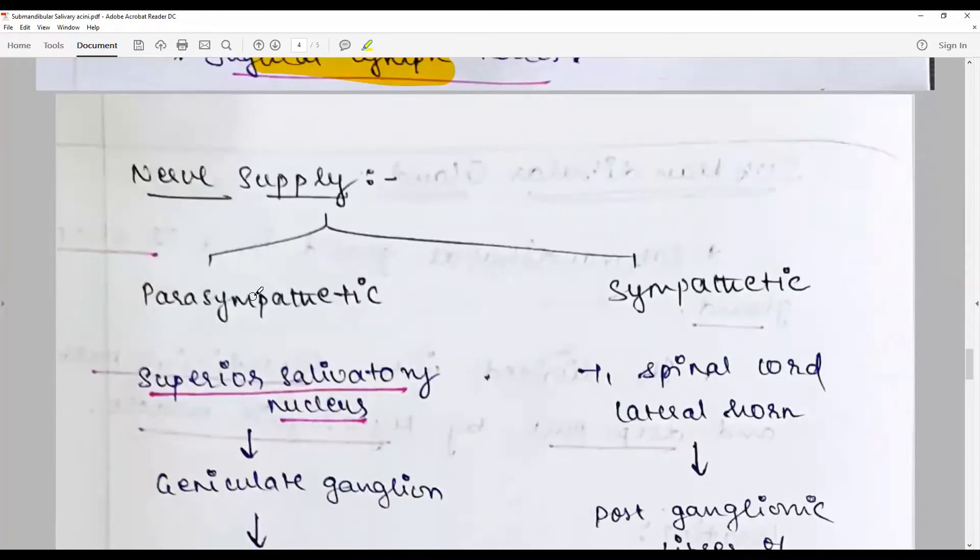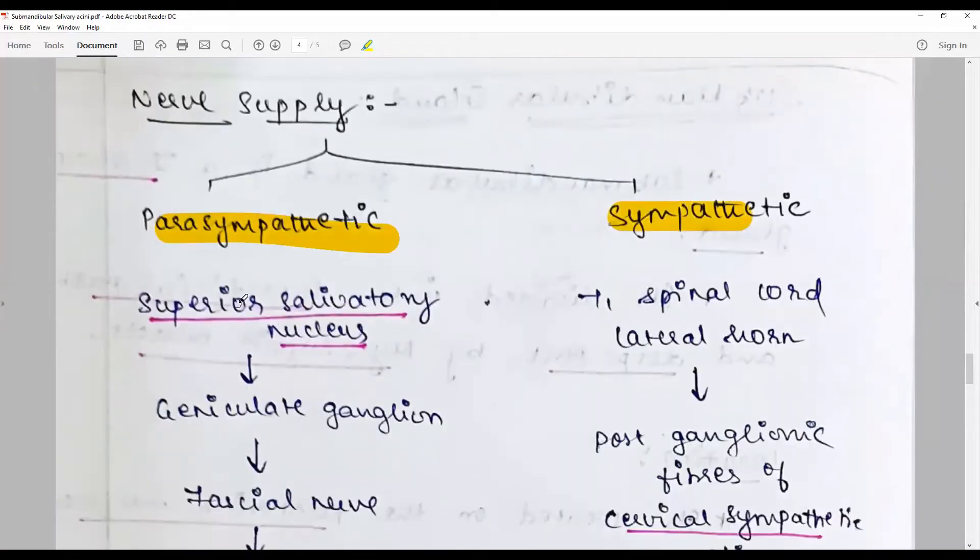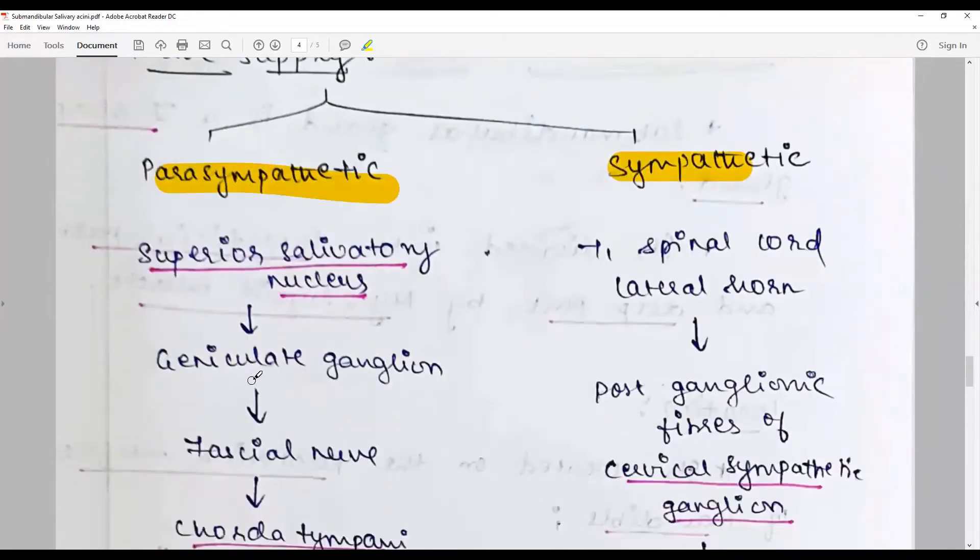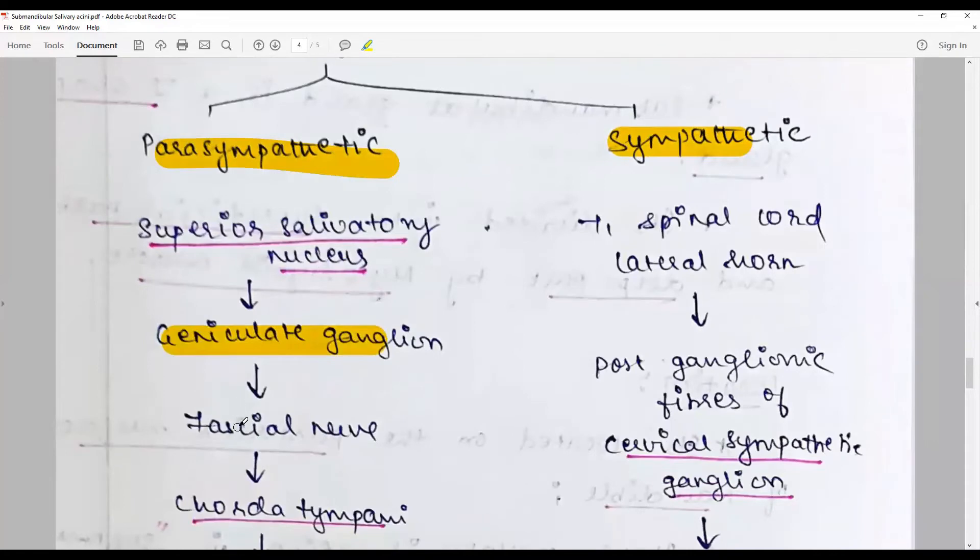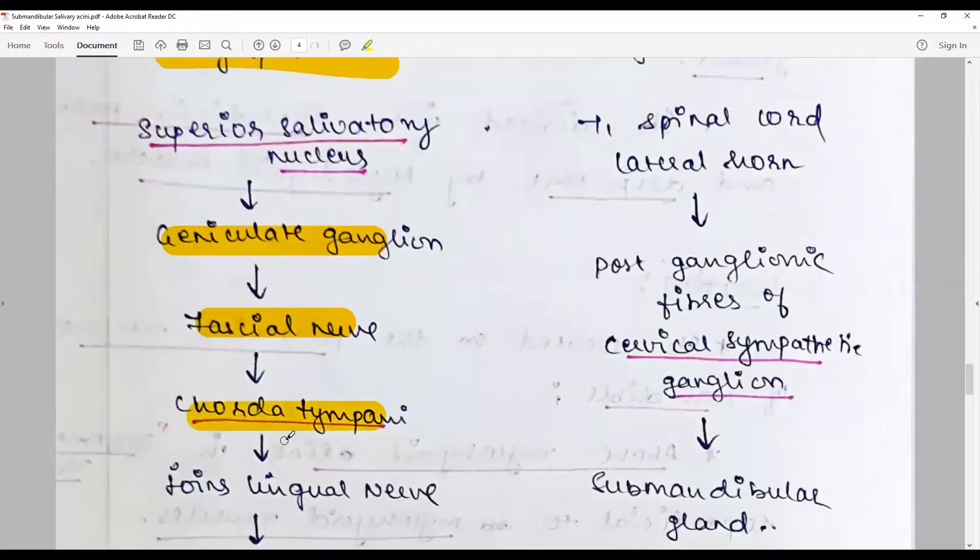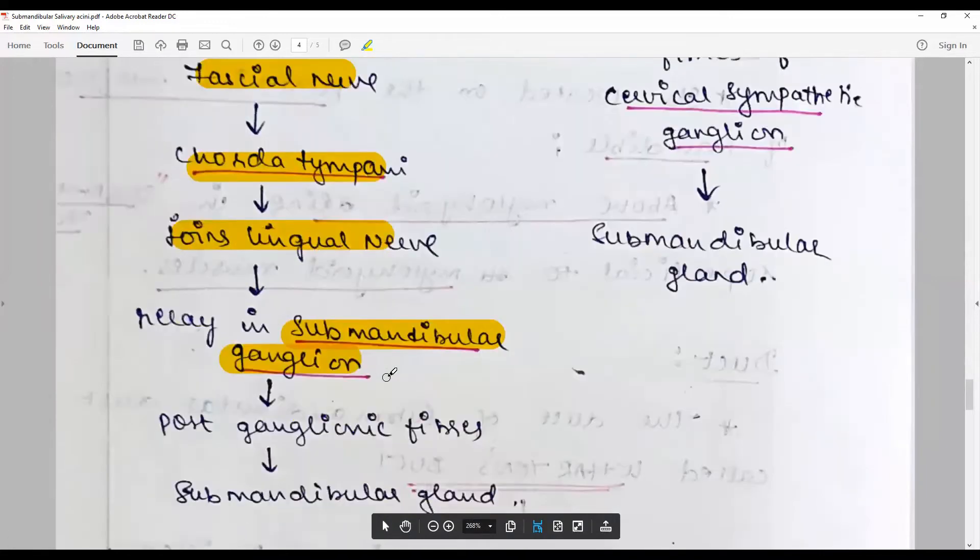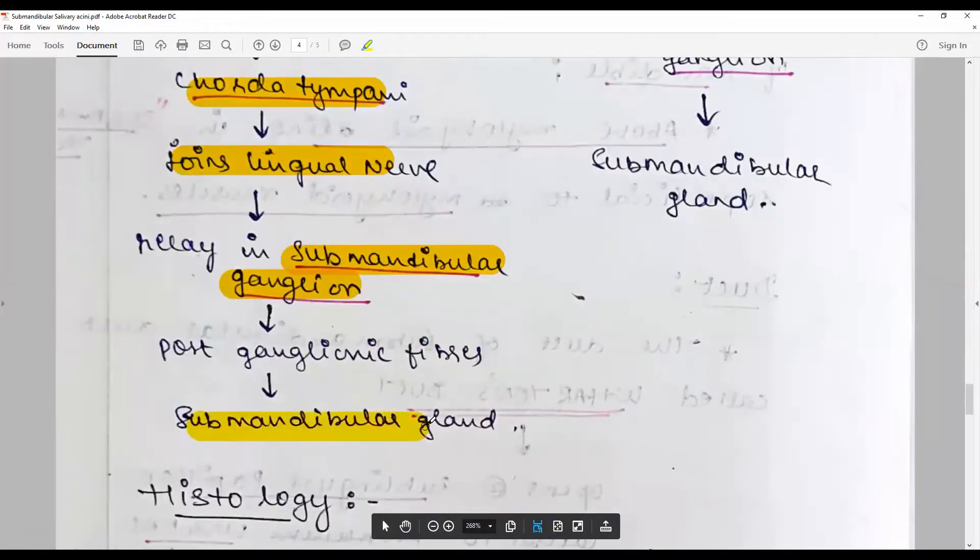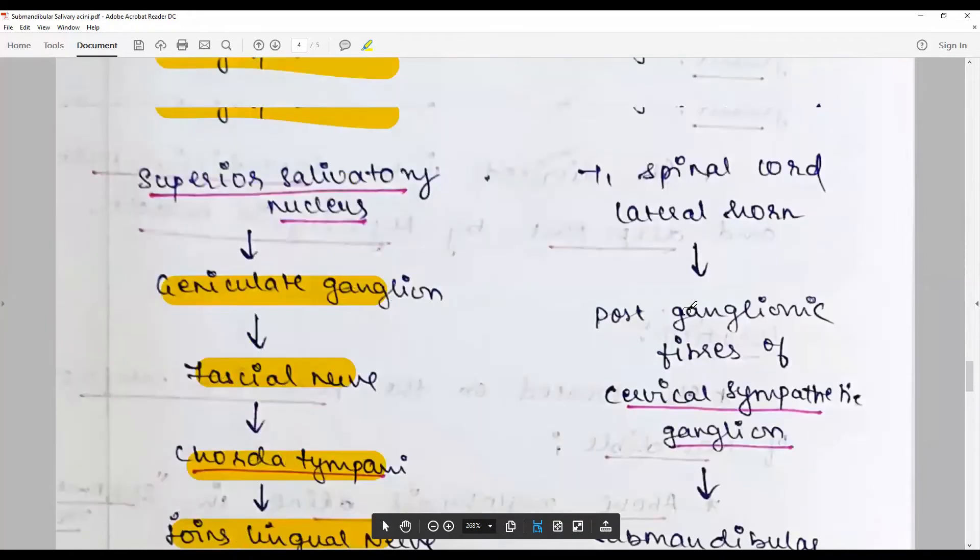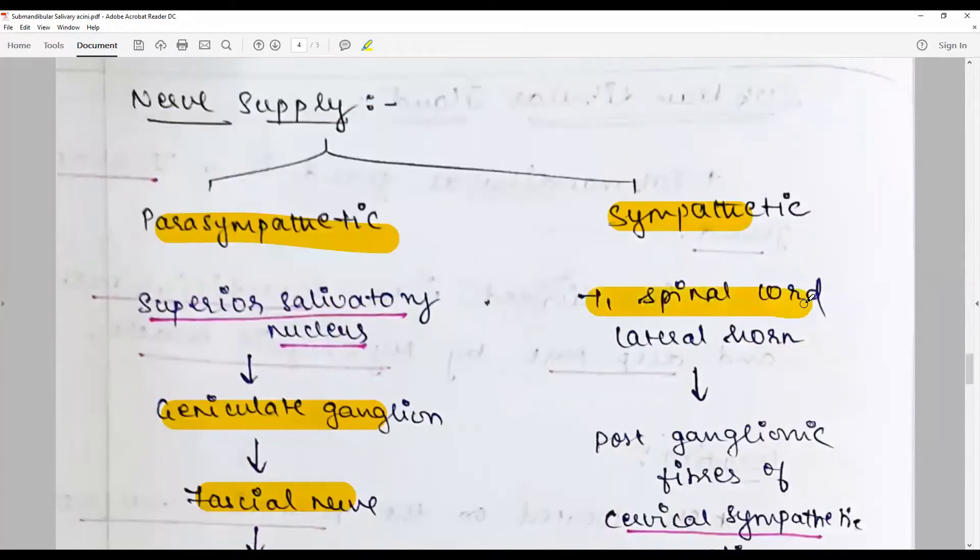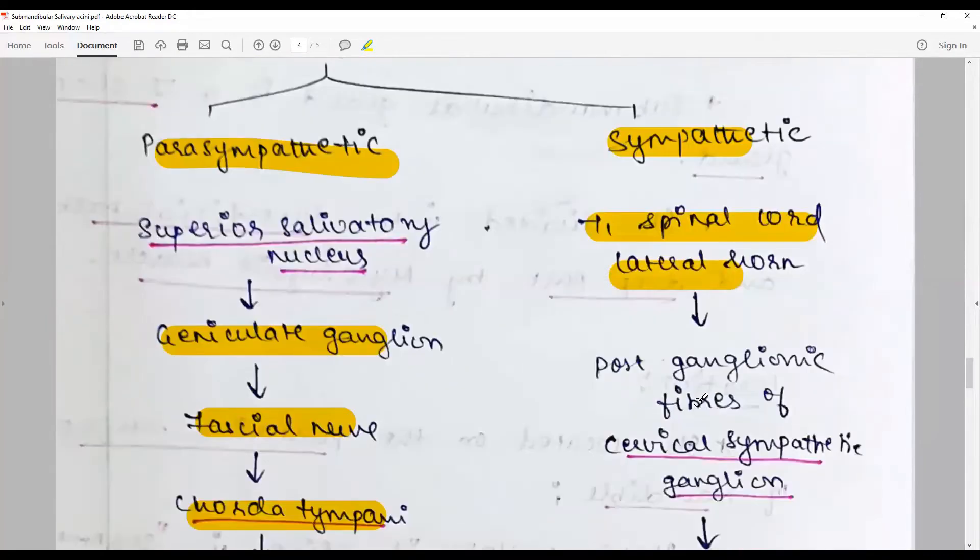The nerve supply: parasympathetic from the superior salivary nucleus, geniculate ganglion, facial nerve via chorda tympani, joins the lingual nerve to relay in the submandibular ganglion. Postganglionic fibers pass to the submandibular gland. The sympathetic fibers from the T1 spinal cord lateral horn, postganglionic fibers from the cervical sympathetic ganglion, reach the submandibular gland.